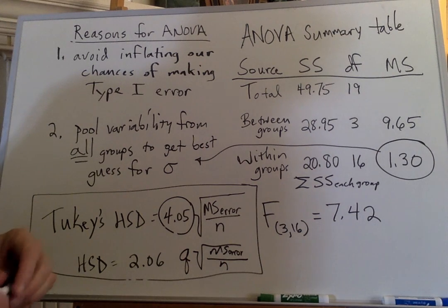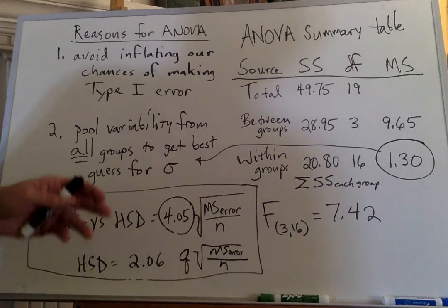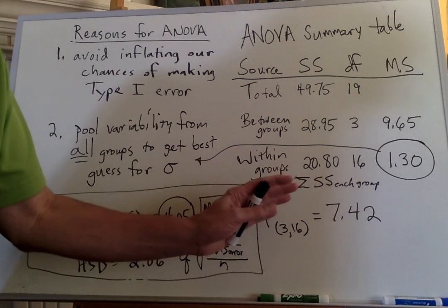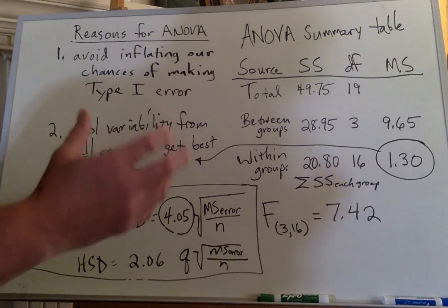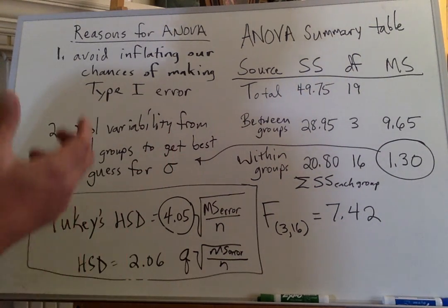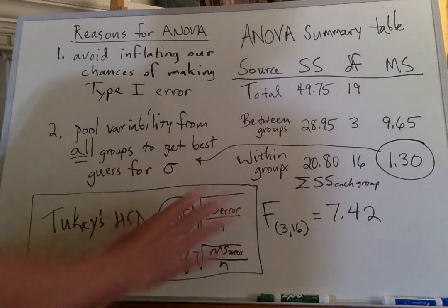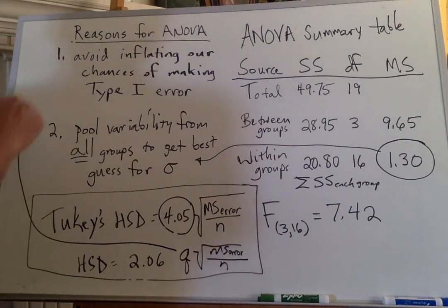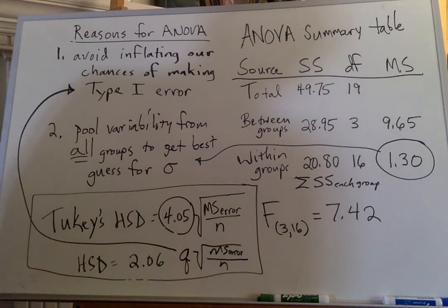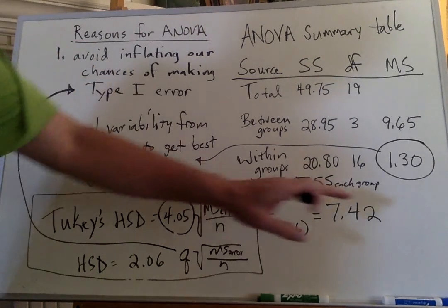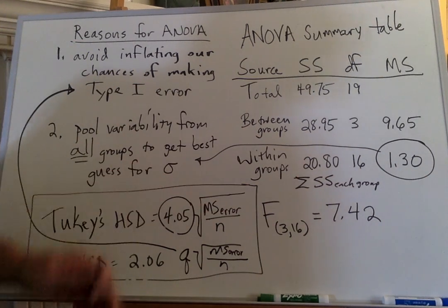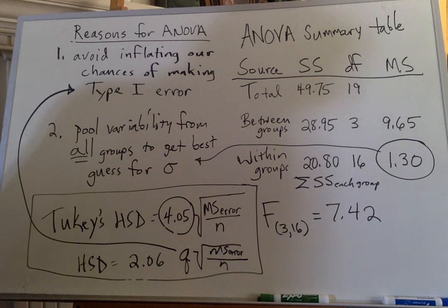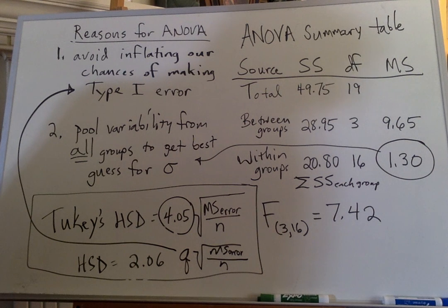We always start with the conceptual, and then fill in with the computational. But I wanted to go back full circle and talk about what components of our analysis corresponded to dealing with each concern. It's the Q from Tukey's HSD that helps us control type 1 error inflation, and it's the mean square error that helps us pool variability. So that's the full circle. Now we're going to start talking about correlation.